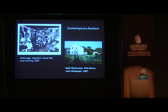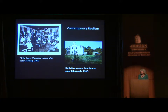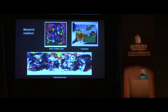That tradition continued—artists still depict local scenes in a realistic style. We have Philip Sage's Napoleon House Bar on exhibit; Sage lives outside New Orleans and depicts that city in color and black-and-white etchings. I've also added a Georgia artist, Keith Rasmussen, who depicted rural and coastal areas of that state in such detailed realistic style that his works almost look like color photographs.